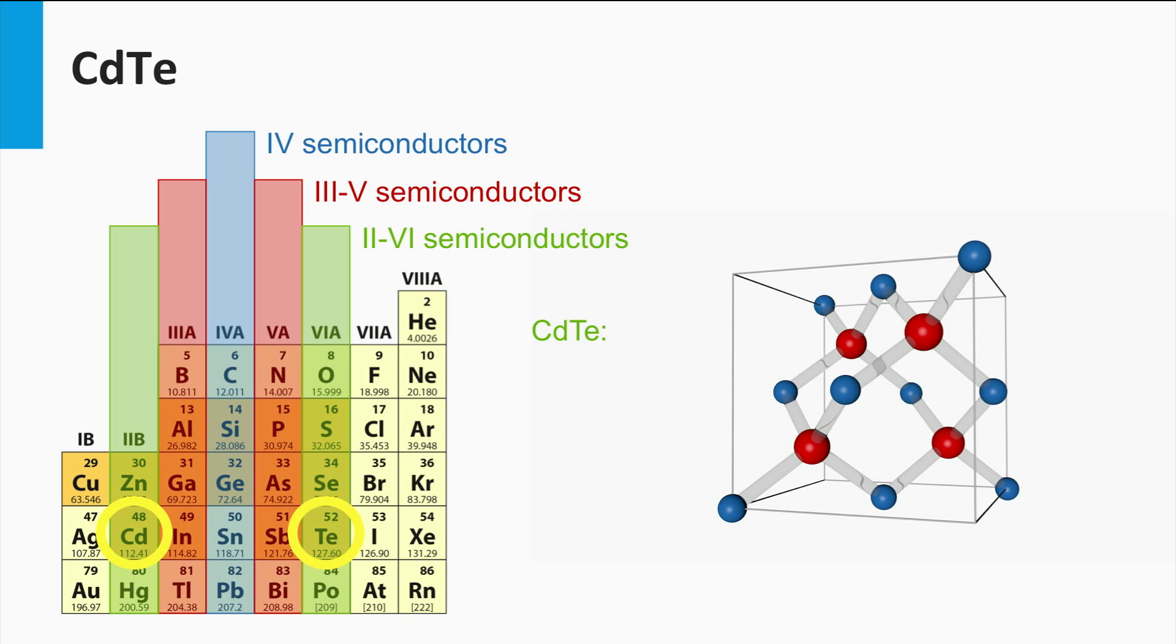The band gap of cadmium telluride is 1.44 eV, a value which lies within the optimal range of band gaps for a single junction solar cell. Cadmium telluride has a direct band gap, consequently only a few microns of cadmium telluride is required to absorb all the photons with an energy higher than the band gap.